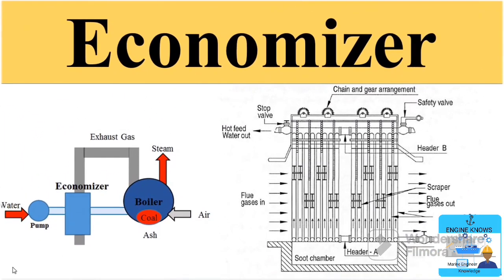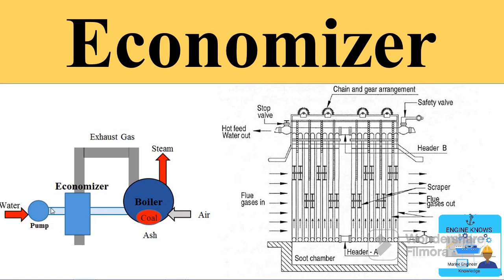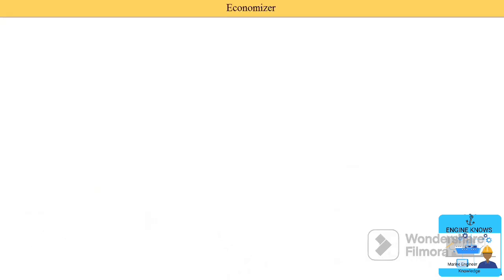In this video I teach you about the economizer — what is the function of an economizer, where it is located in the boilers, and its construction, working, and advantages and disadvantages. So first we study the function of the economizer.